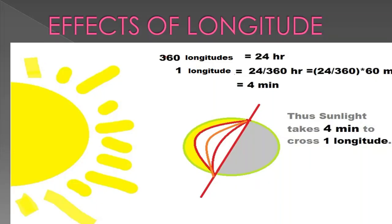The total number of longitudes is 360 and it takes 24 hours to rotate around the sun. So one longitude takes 4 minutes — the sun takes 4 minutes to cross one longitude.